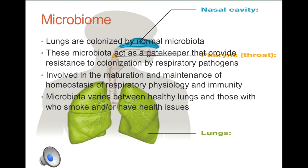The last way the respiratory tract tries to limit microbes is through colonized microbiomes. Extensive research has shown that the lungs are colonized by normal microbiota. These are thought to be more helpful than harmful. These microbiota are involved in the homeostasis of respiratory physiology and immunity. They compete with potential pathogens by secreting antimicrobial peptides to limit the growth of pathogens.